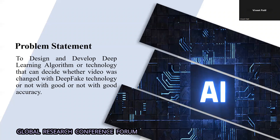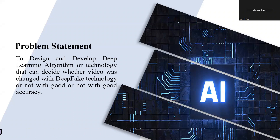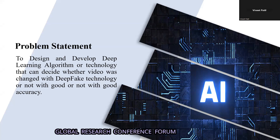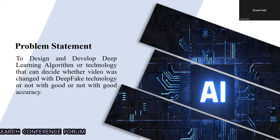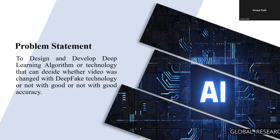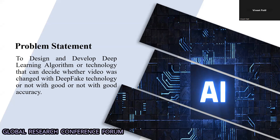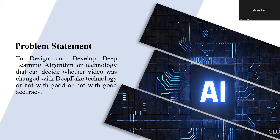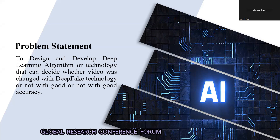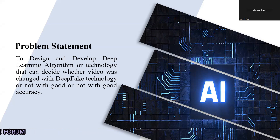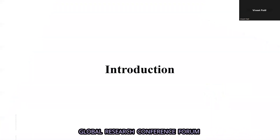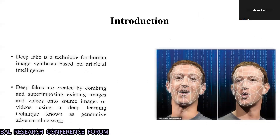The problem statement of the project is to design and develop a deep learning algorithm that can determine whether a video has been altered using deepfake technology or not, with good accuracy. The video is generated by AI where one person's face is swapped with another, which can damage personal or public figure identity and can be used for abusive purposes. For that, we need to develop a detection algorithm.